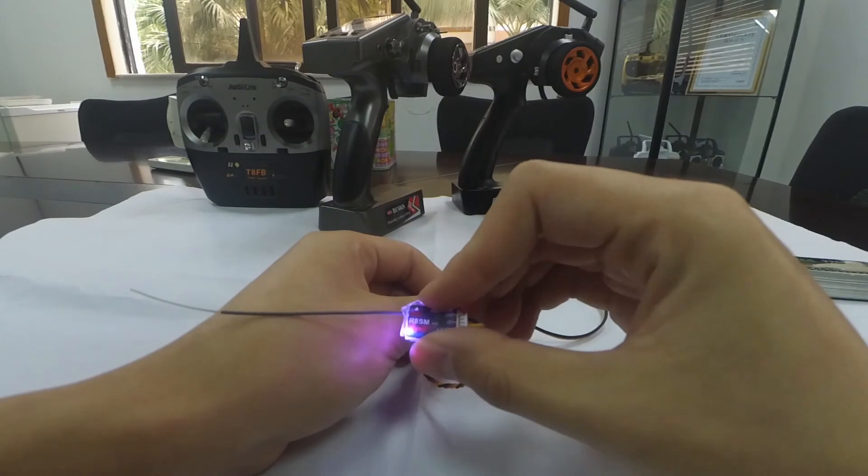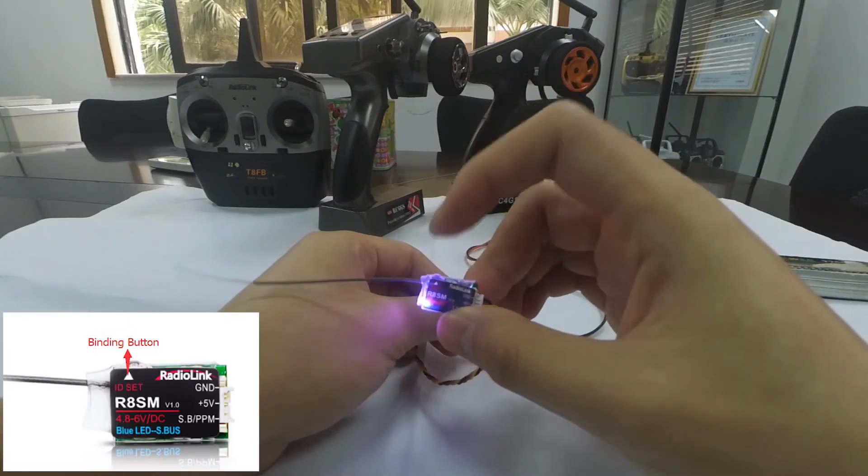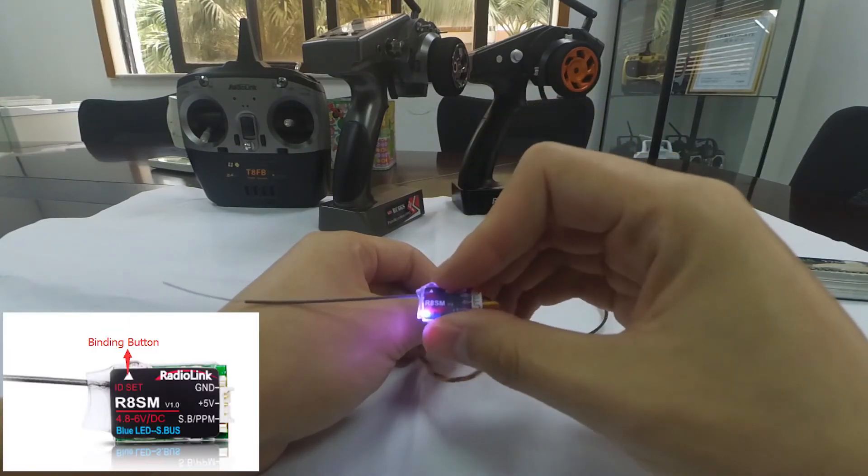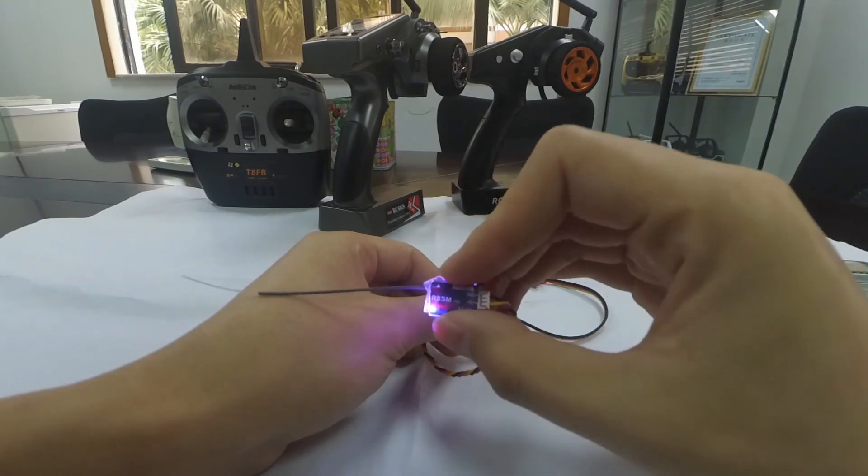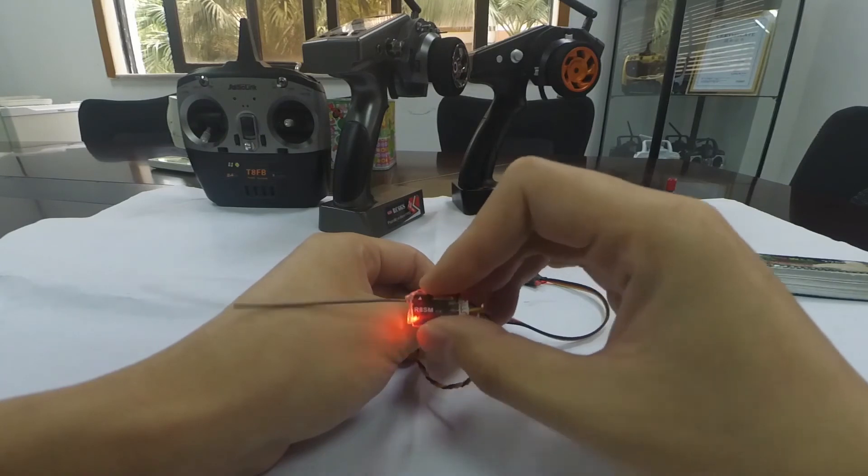If we want to change the signal output as PPM, we need to short press the binding button twice within one second. We can see that the LED turns red, meaning the current signal output is PPM.